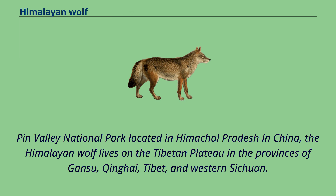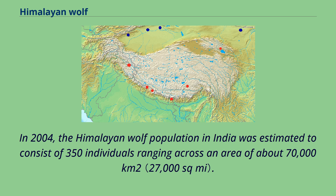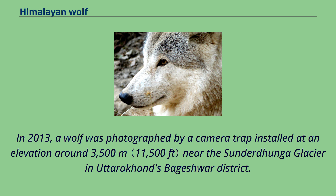The Himalayan wolf lives on the Tibetan plateau in the provinces of Gansu, Qinghai, Tibet, and western Sichuan. In northern India, it occurs in the Union territory of Ladakh and in the Lahaul and Spiti region in northeastern Himachal Pradesh. In 2004, the Himalayan wolf population in India was estimated to consist of 350 individuals ranging across an area of about 70,000 square kilometers. Between 2005 and 2008, it was sighted in the alpine meadows above the tree line northeast of Nanda Devi National Park in Uttarakhand. In 2013, a wolf was photographed by a camera trap installed at an elevation around 3,500 meters near the Sundarthanga Glacier in Uttarakhand's district.